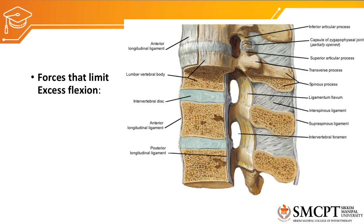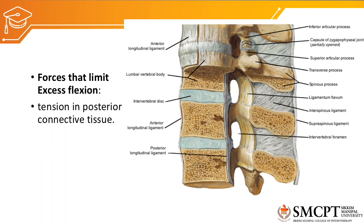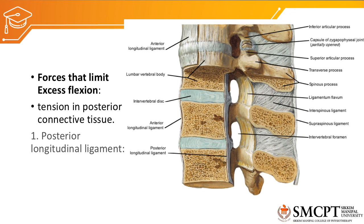What are the forces that limit excess flexion? Flexion can be limited by the tension created in the posterior connective tissue, which are mostly ligaments. The first and most important ligament which prevents excessive flexion is the posterior longitudinal ligament, which we have already discussed for the cervical vertebra. These ligaments are similar to those of the cervical vertebra — they prevent flexion of the vertebral spine.